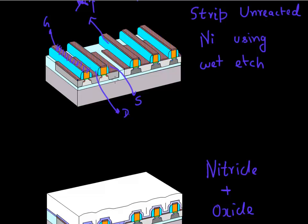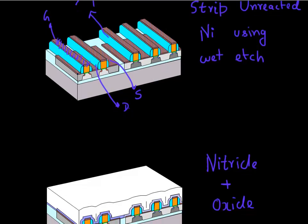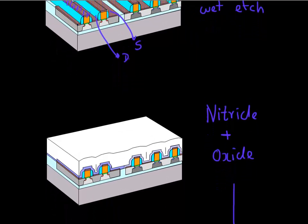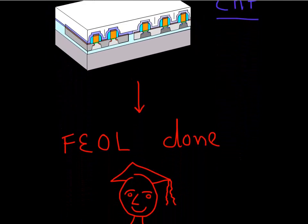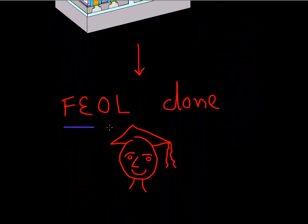Once the silicide is formed, we are done forming our transistor. We cover it with a layer of nitride followed by a layer of oxide in a conformal deposition that preserves the topography. Next, a CMP step is done for further processing, leaving nice transistors covered with an oxide layer. This essentially finishes the front end of the line process flow, and you can pass to the back end of the line to finish the rest of the microprocessor flow.